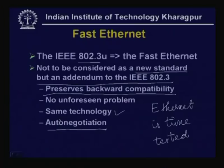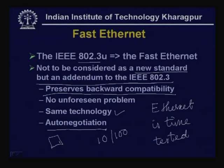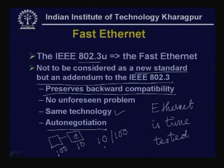Some new features were added to fast Ethernet, including auto negotiation. Network interface cards were provided with auto negotiation functionality, allowing the card to operate at either 10 or 100 Mbps — making it backward compatible with Ethernet. A fast Ethernet switch can communicate with computers operating at 10 Mbps or 100 Mbps, overcoming speed incompatibility. The physical layer becomes more complex.